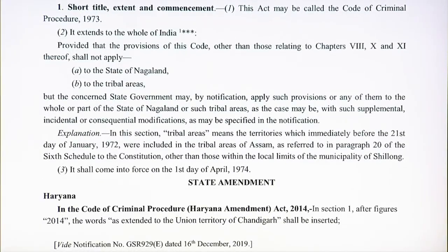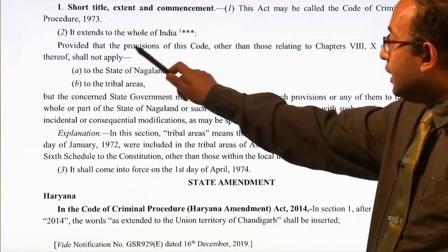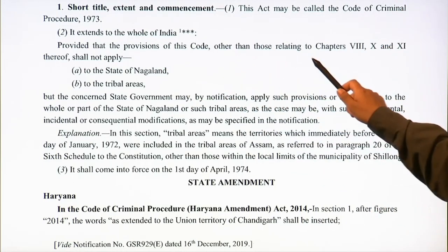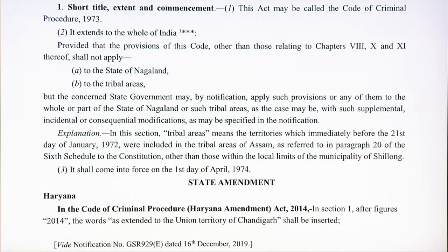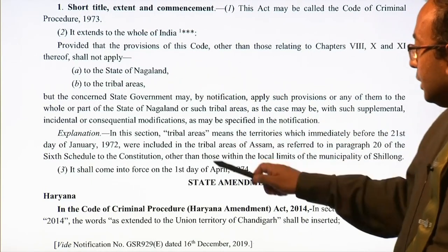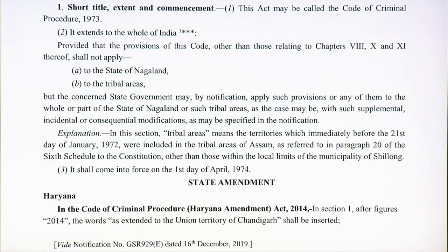Looking at the short title, extent and commencement: the CrPC extends to the whole of India. However, the provisions of this code other than those relating to Chapters 8, 10 and 11 shall not apply to the state of Nagaland and to the tribal areas — meaning the territories which immediately before the 21st day of January 1972 were included in the tribal areas of Assam as referred to in paragraph 20 of the 6th Schedule of the Constitution, other than those within the local limits of the municipality of Shillong.